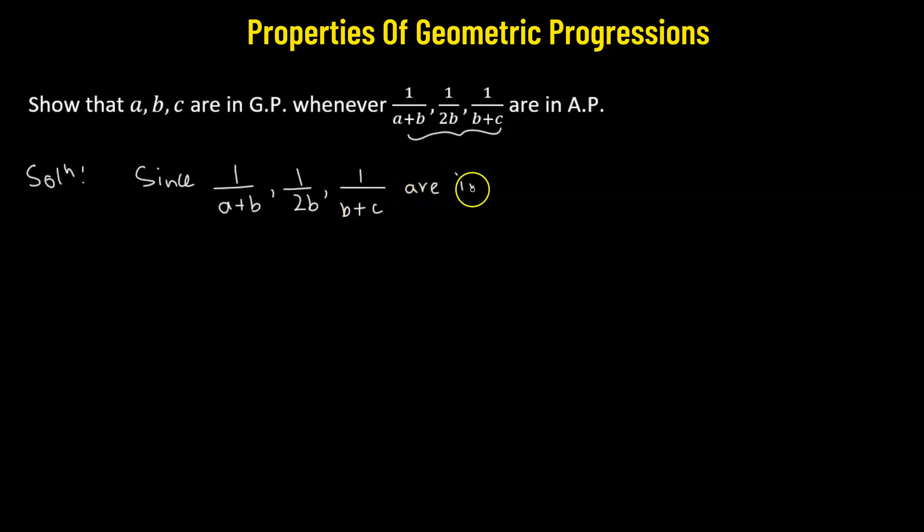That simply means that two times the middle term, which is 1 over 2b, must equal the sum of the extremes. That means 1 over a plus b added to 1 over b plus c.